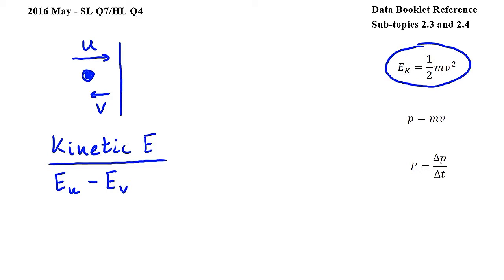So we get one-half M times U squared, where U is the speed before the collision, minus one-half M V squared, where V is the speed after the collision. Factorizing one-half M, we get one-half M times U squared minus V squared, which can be written as M times U squared minus V squared over 2, which is the loss in kinetic energy.